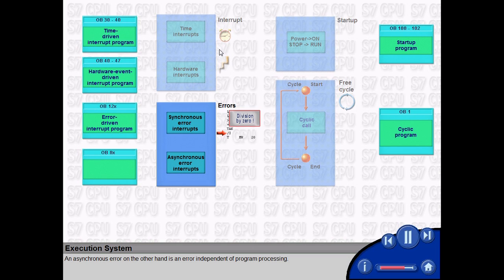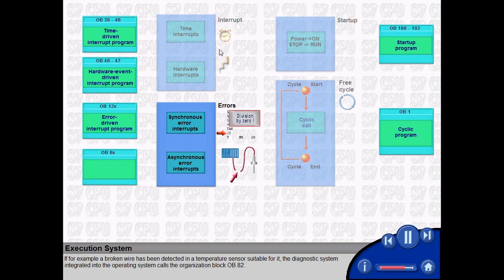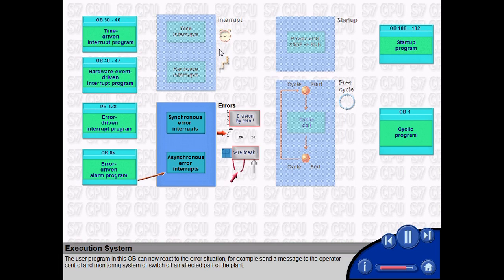An asynchronous error, on the other hand, is an error independent of program processing. If, for example, a broken wire has been detected in a temperature sensor suitable for it, the diagnostic system integrated into the operating system calls the organization block OB82. The user program in this OB can now react to the error situation.